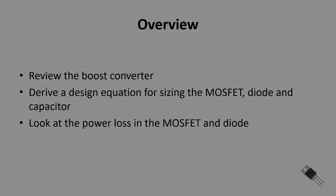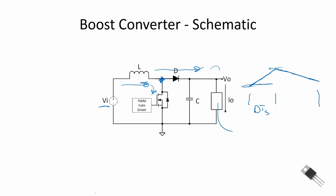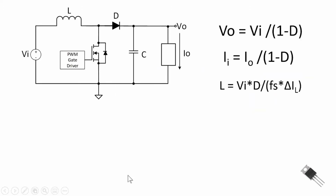Let's review the schematic of our boost converter. We have a DC input voltage and an inductor. The low-side switch is a MOSFET; when turned on, it shorts the node to ground, causing current to ramp up through the inductor. We hold that switch closed for a portion of the total switching time, D·T_S, where T_S is our switching period. When we open the switch, the inductor current flows through the diode to the output load, ramping down. We have a ripple current through the inductor between I_max and I_min.